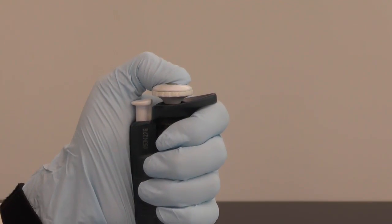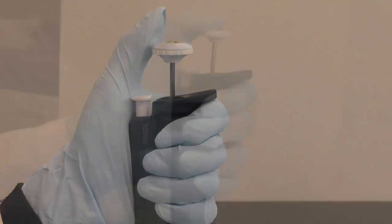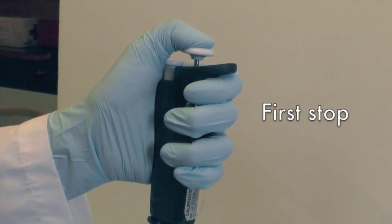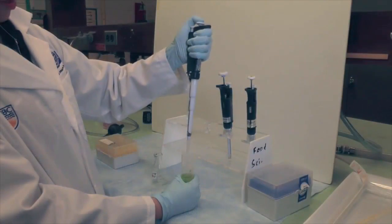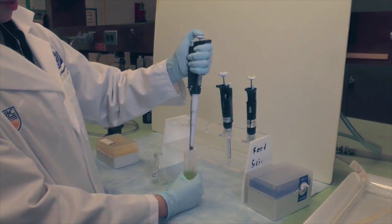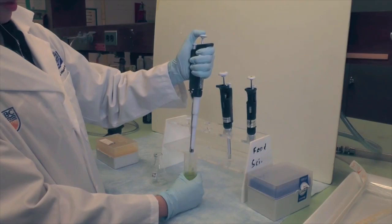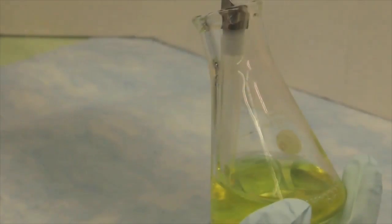There are two stops when operating a pipetment. To draw up the liquid, press the push button to the first stop. Insert the pipet tip halfway into the liquid, then slowly release the push button to draw liquid into the tip.